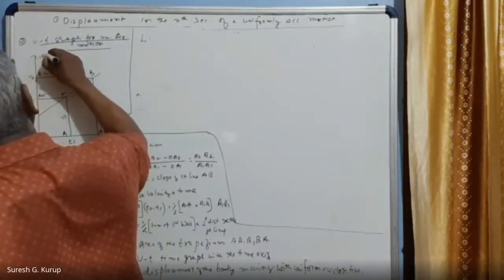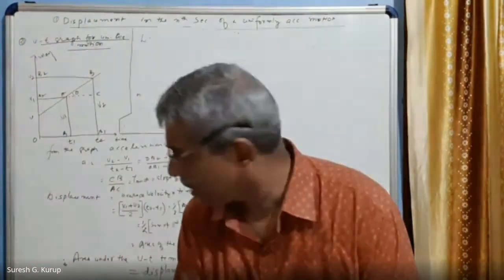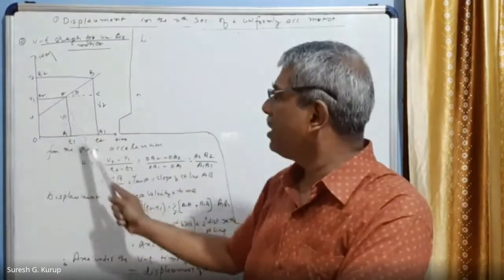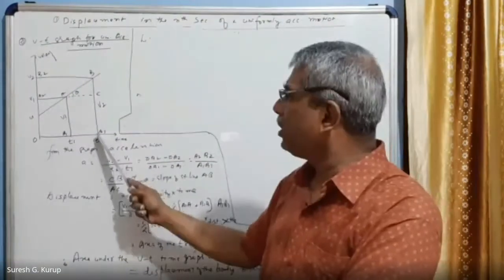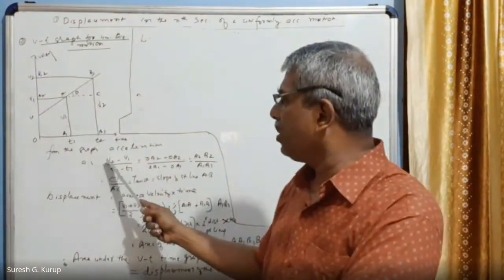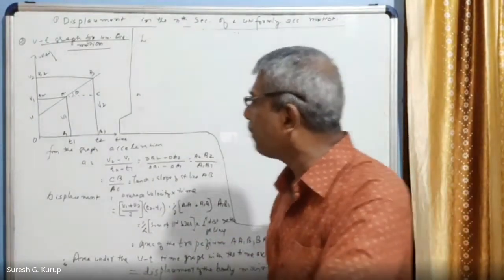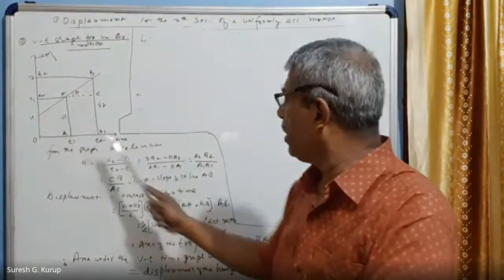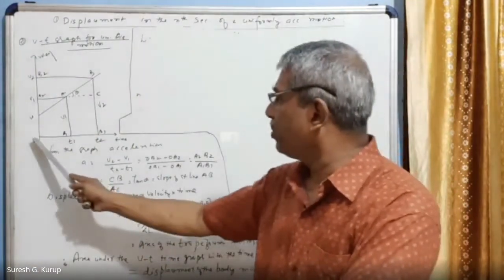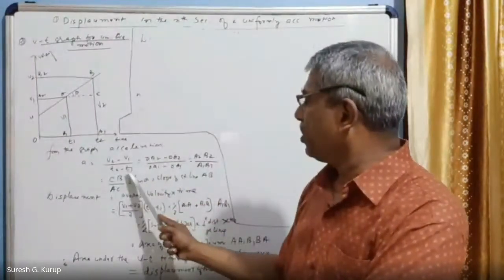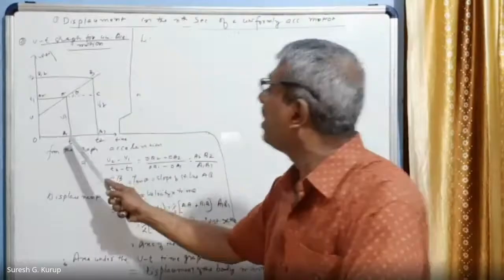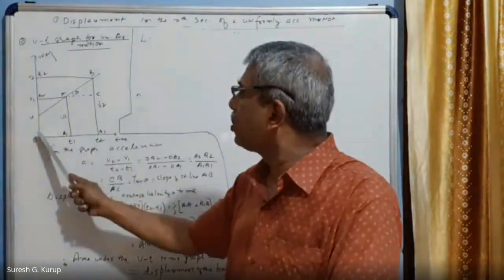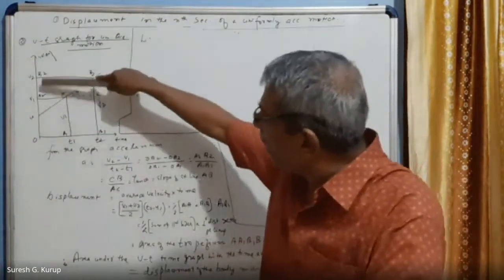From the graph, acceleration a equals change in velocity divided by change in time. At time t1 the velocity is v1, and at time t2 the velocity is v2. Therefore change in velocity divided by change in time equals (v2 - v1)/(t2 - t1). Here v2 equals OB2 and v1 equals OA1 on the graph.